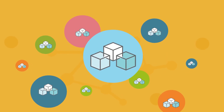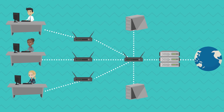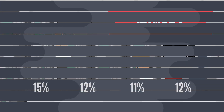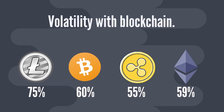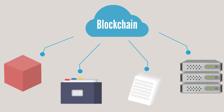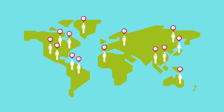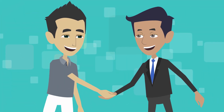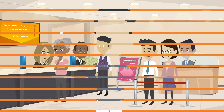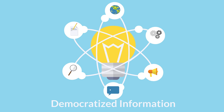Blockchain technology is simple to understand at its roots. Basically, the tech exists as a shared database filled with entries that must be confirmed and encrypted by large networks of people called miners. People generally only associate cryptocurrencies and their volatility with blockchain, however the underlying technology has an incredible amount of uses in nearly all industries around the world, with massive traction already seen from agriculture all the way to banking and finance.